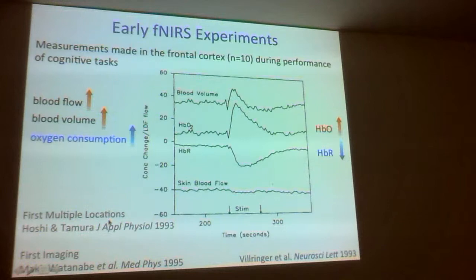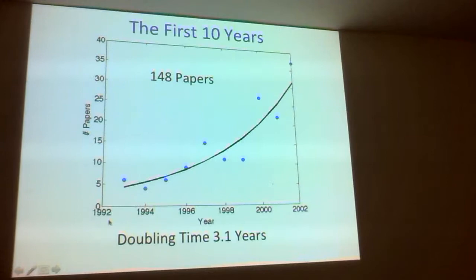It was only two years later that Hitachi came up with the first imaging system that they sell commercially. That was 1993. I started working on this in 1997-98, and the field was quite small — in the first 10 years there were only 148 papers. I had read all of them. It was really quite amazing in that first 10 years — there were already papers exploring a range of different stimuli.